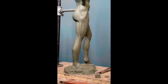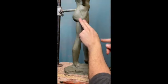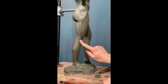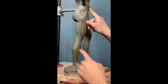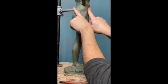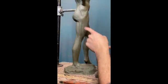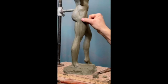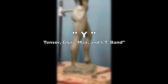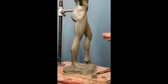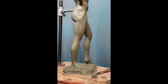Abstractly, what is this shape? It's a Y shape. You have the tensor and gluteus maximus, and then you have your IT band. So if you get confused, look for the Y shape first.